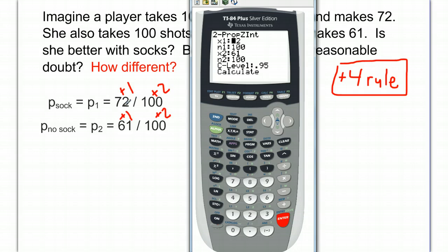To type in our values, we add in the plus 4 rule. So 72 plus 1 would be 73. 100 plus 2 would be 102. 61 plus 1 is 62. And 100 plus 2, again, is 102.